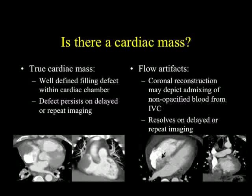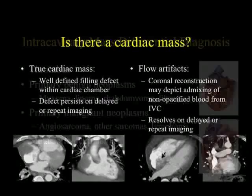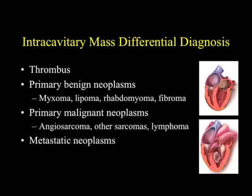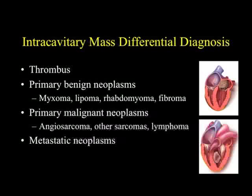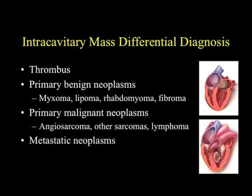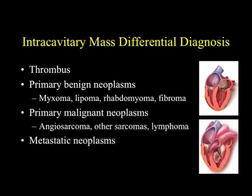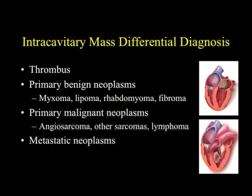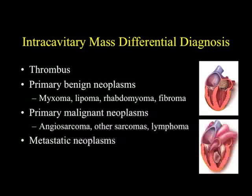Let's talk about intracavitary masses. The differential diagnosis includes thrombus — probably most common, especially in patients with catheters in place, since it's easy to get thrombus at the end of a central line. We can think about primary benign tumors: myxoma, lipoma, rhabdomyoma, fibromas. We can think about primary malignant tumors: angiosarcomas, leiomyosarcomas. We could think about lymphoma, and we also could think about metastatic disease.